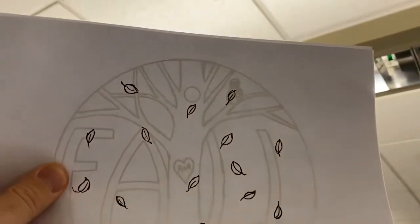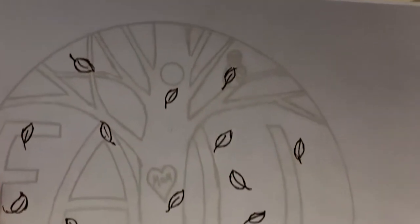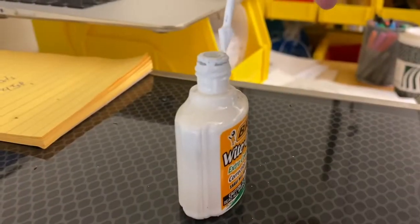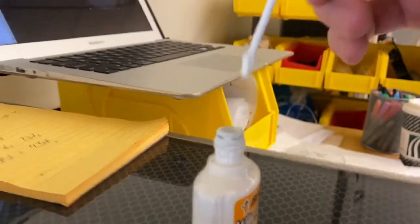I realized I made a mistake and I had a leaf covering my owl. Since I didn't want that to happen, I used my white-out to get rid of that leaf. Then, I laser cut the front.